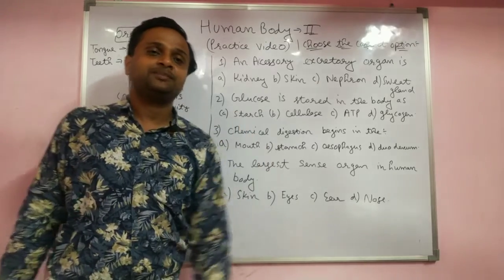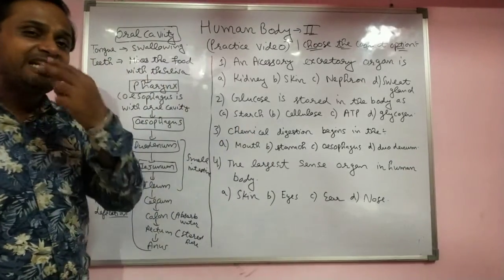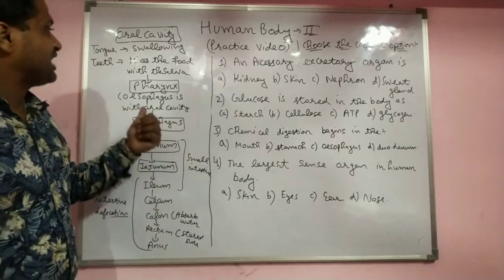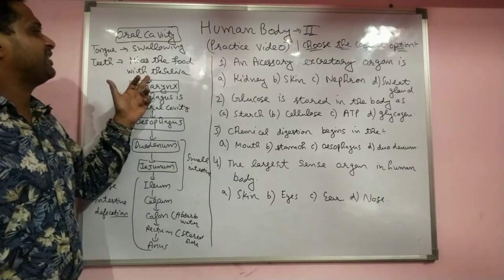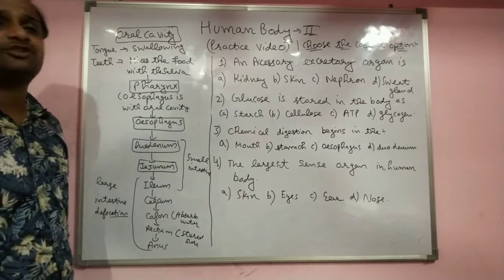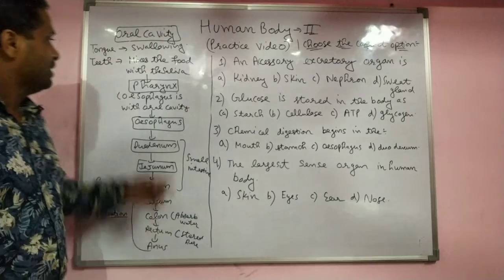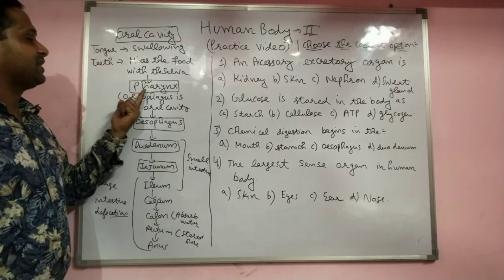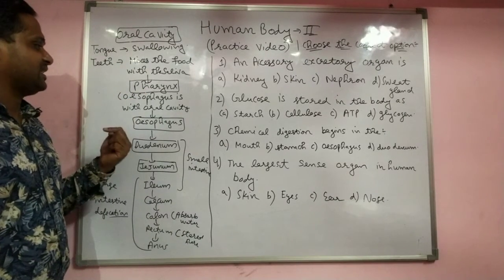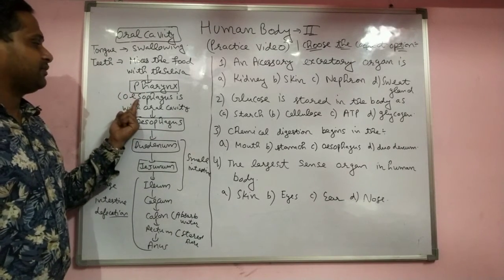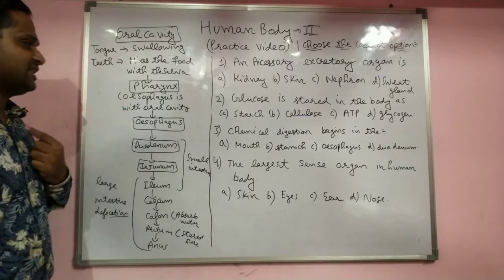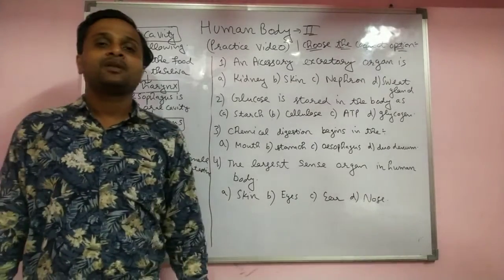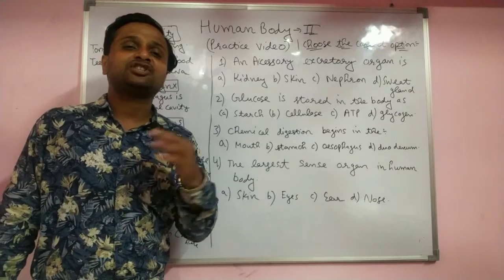We have the teeth, which chew the food and mix it with saliva — that process is called mastication. After that the common passage, the pharynx, is there, and afterward the esophagus — the food pipe — which performs peristalsis movement to push the food into the stomach.